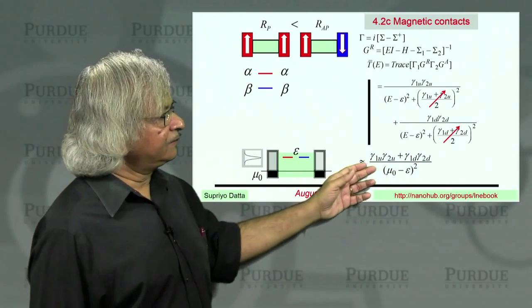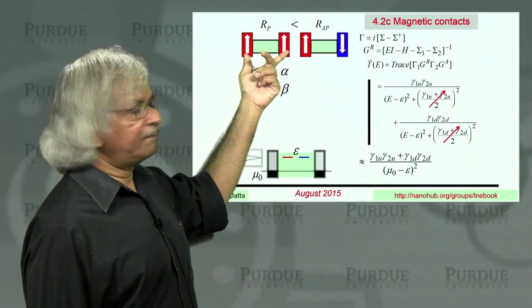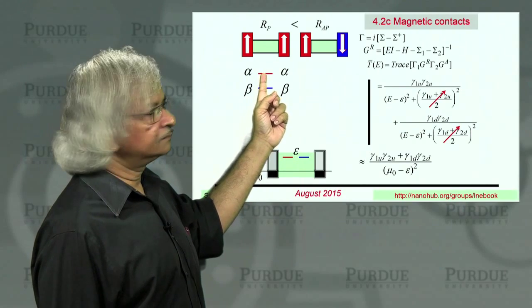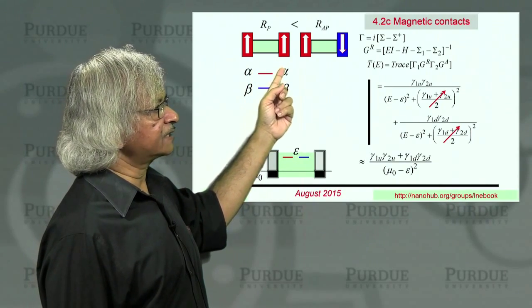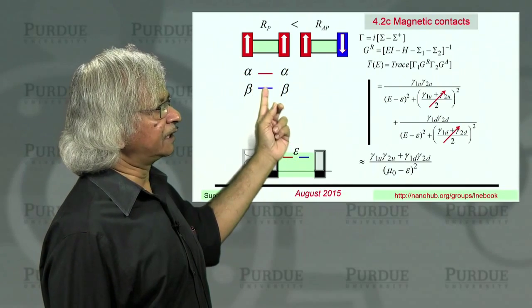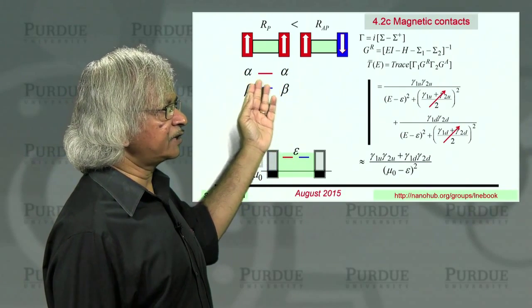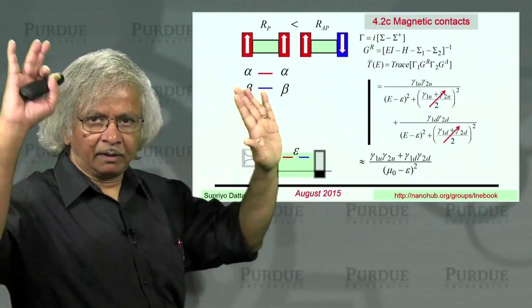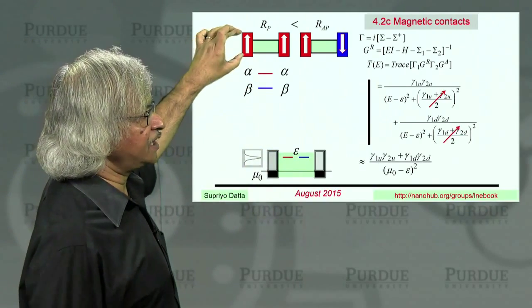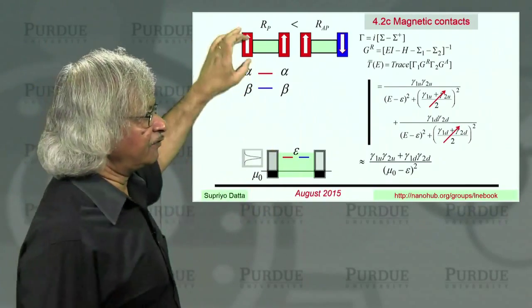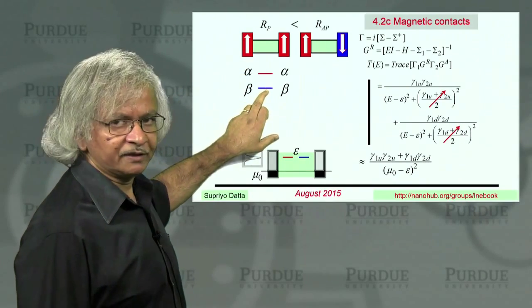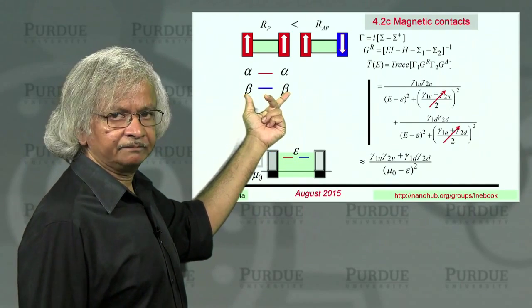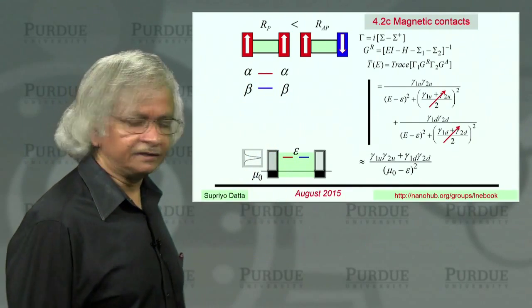Okay. So anyway, so if you make this assumption then, then you see the denominators are both equal. So I could put mu 0 minus epsilon square. And in the numerator, I'll get gamma 1u, gamma 2u, plus gamma 1d, gamma 2d. So next then, we note that if the contacts are parallel, then when you look at the upspin channel, it can get out into the contacts at a rate, say, alpha. But if you look at a downspin channel, the rate at which they can get out is much lower.